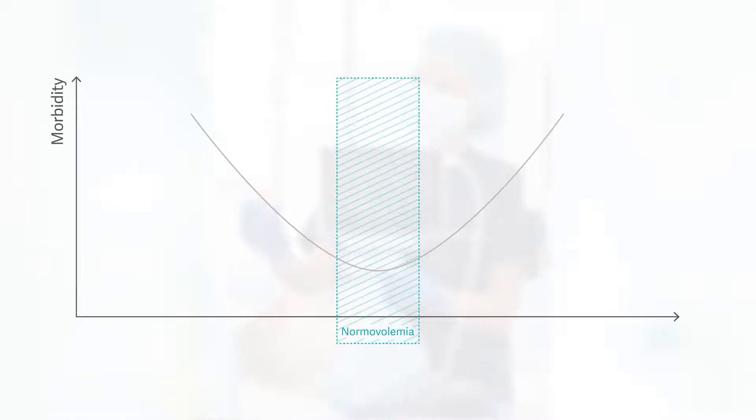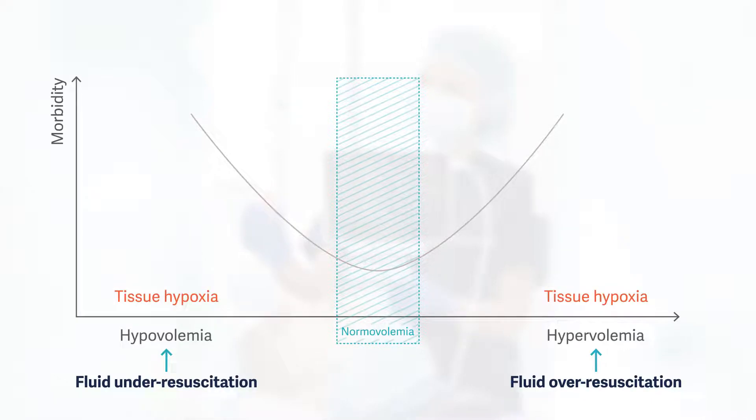Keeping the patient's fluid status balanced between hypovolemia and hypervolemia is the most effective way to combat global tissue hypoxia, shock, and multi-organ failure.